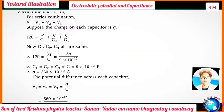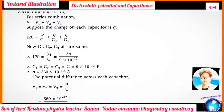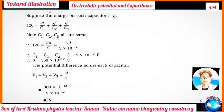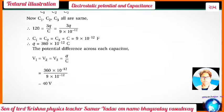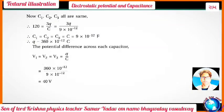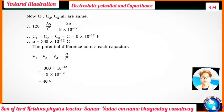Since C1 = C2 = C3 = 9×10⁻¹² farad, Q = 360×10⁻¹² coulomb. The potential difference across each capacitor: V1 = V2 = V3 = Q/C = 360×10⁻¹² / 9×10⁻¹² = 40 volts.